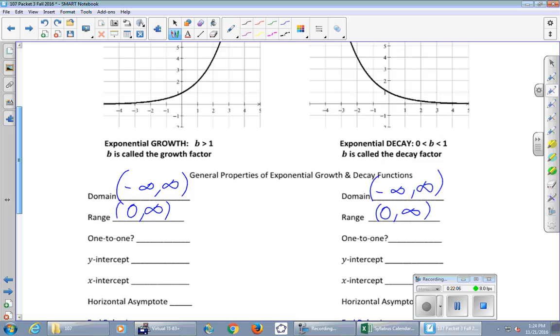And the next one says, is it one to one? Now, we haven't used that phrase in a long time. One to one means it passes the horizontal line test, meaning that no matter what horizontal line you draw, it will never hit the graph more than once. Is that true? Or are there horizontal lines that hit this graph more than once? It's true. There's no way to draw a horizontal line that hits it twice. So it is one to one in the growth case on the left. And also, yes, one to one in the decay case on the right. On the left, what is the y-intercept? Both coordinates, please. Zero, comma, one. On the right, what is the y-intercept? The y-intercept is zero, one.